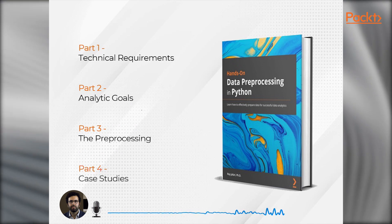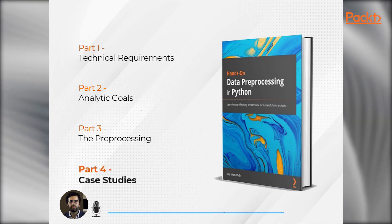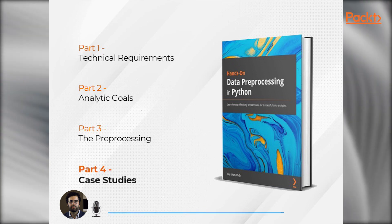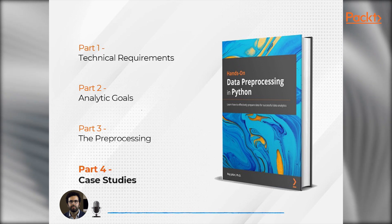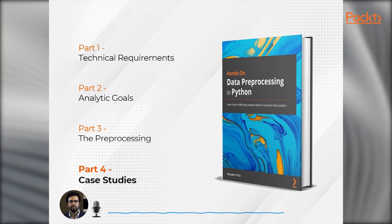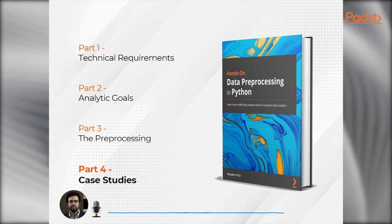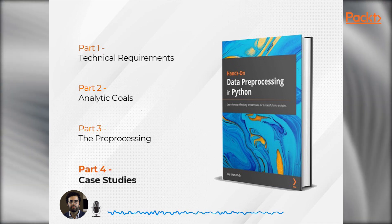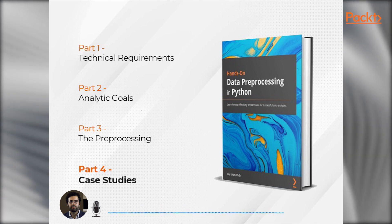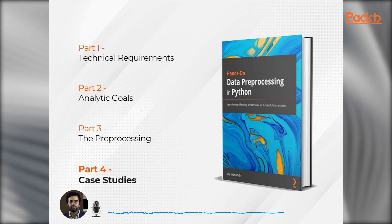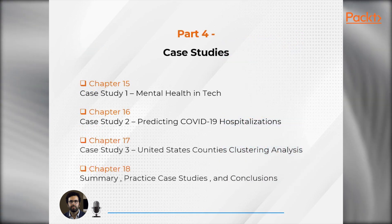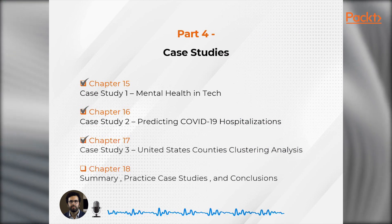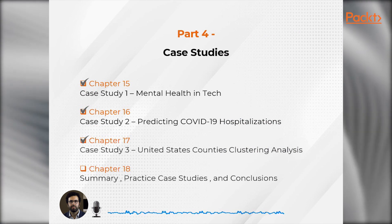Finally, we arrive at the fourth part of the book: Case Studies. Let me use a quick analogy — during a soccer game, professional players need to use skills such as dribbling, passing, defending, and shooting at the same time, in tandem or combined. Similarly, in a real analytic project you may need to perform data preprocessing steps at the same time, combined or in tandem. Chapters 15 to 17 are real case studies that give readers a taste of how all data preprocessing steps come together.